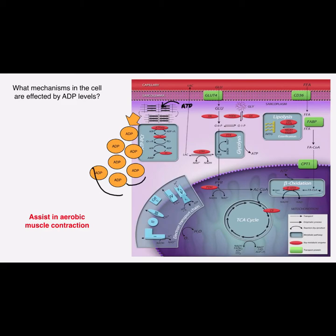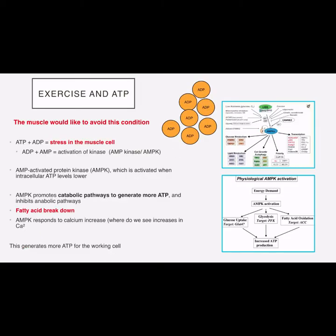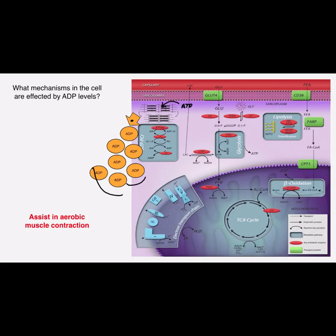ATP is supplying muscle contraction and ADP is being spat out. We talked about several lectures ago — in chapter two and chapter three — how when we have ADP greater than ATP, that's a problem.